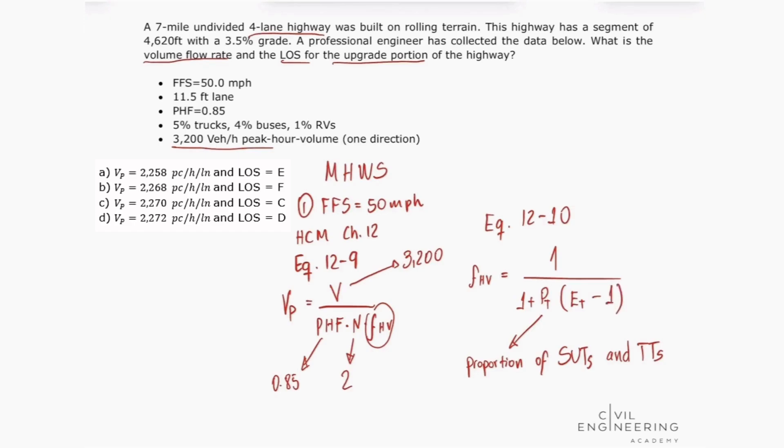So we have this proportion because the problem gave us 5% trucks, 4% buses, and 1% RVs. So let's first break this down a little bit so we can see what is the breakdown of SUTs and TTs.